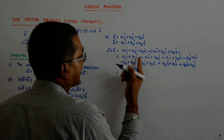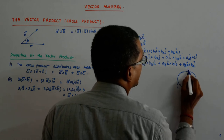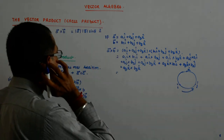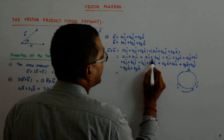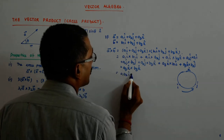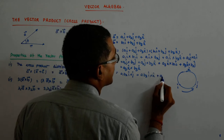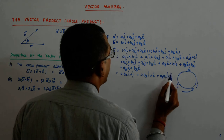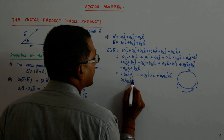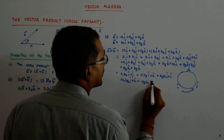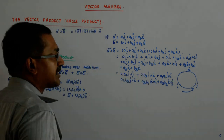Using the distributive property, we expand a cross b and apply the cyclic diagram for i, j, k. Terms like i-hat cross i-hat are zero and drop out. The surviving terms are: a1 b2 (i cross j), a1 b3 (i cross k), a2 b1 (j cross i), a2 b3 (j cross k), a3 b1 (k cross i), and a3 b2 (k cross j). Same-unit cross products like j cross j and k cross k are also zero.